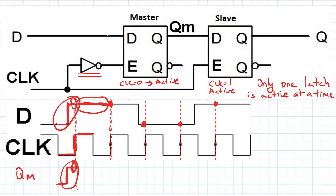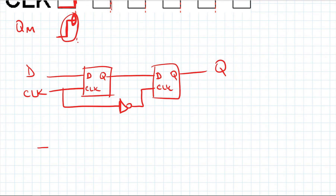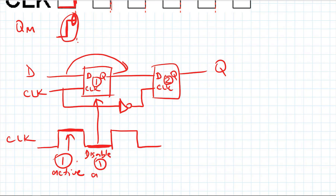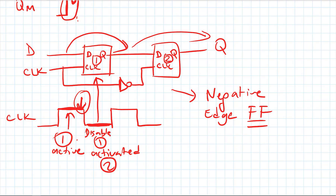What happens if we change the placement of the inverter? In that case, when the clock is high, the first latch is active and D is copied to QM. When the clock is low, the first latch is disabled and the second is activated. The value sampled just before the falling edge is then passed to the output. By changing the placement of the inverter, we can get either a positive edge or a negative edge flip flop.